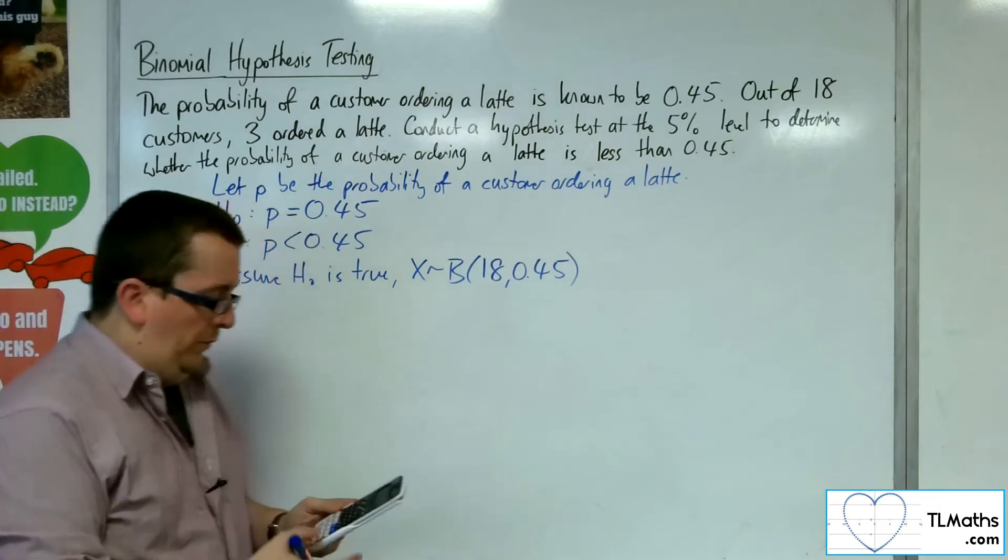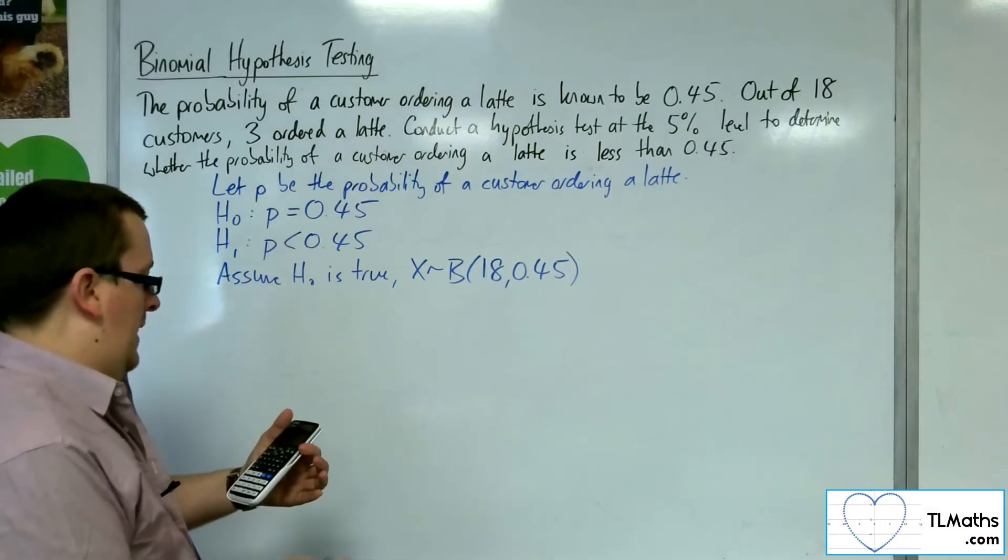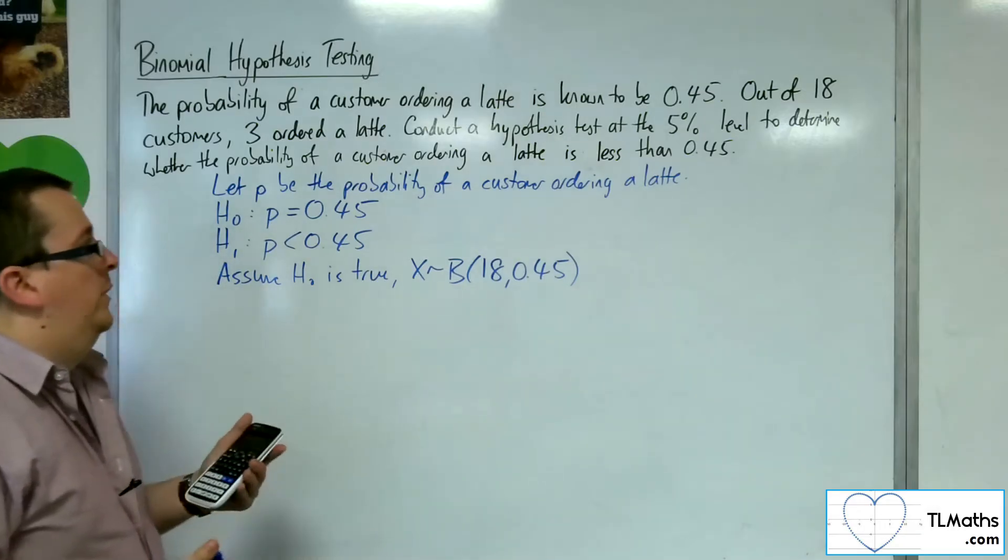Then press equals. N is 18, the probability is 0.45, and we want to generate the tables required.